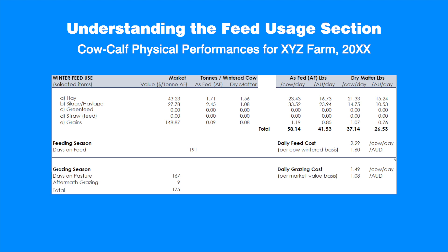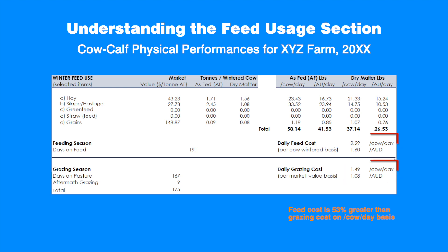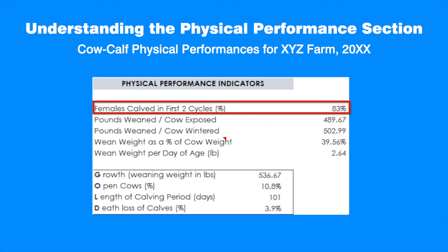The feed usage section also provides winter feeding and grazing costs per cow and on an animal unit day basis. In our example, the daily winter feed cost is $2.29 per cow compared with $1.49 per cow on grazing, or 53% higher. The producer might want to consider implementing extended or year-round grazing if conditions allow, keeping in mind that cattle are on feed 12 days longer than the benchmark average of 179 days. The females calved in the first two cycles shows the portion of cows calved in the first 42 days of the calving period — about 83% in our example, lower than benchmarks by four percentage points.